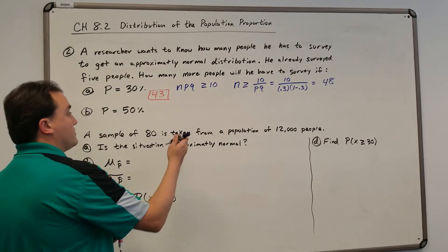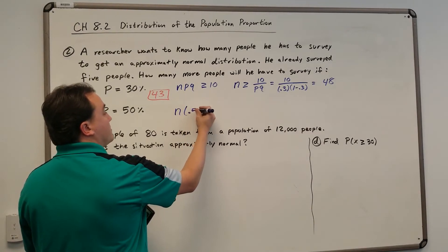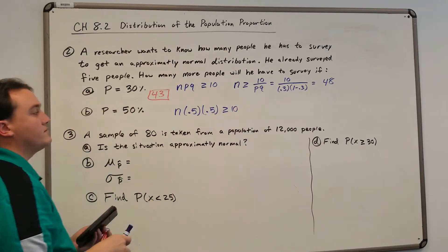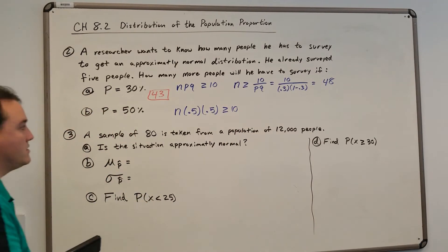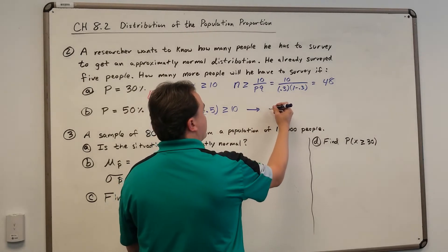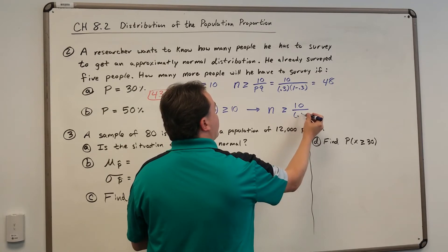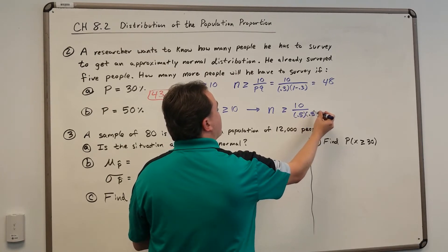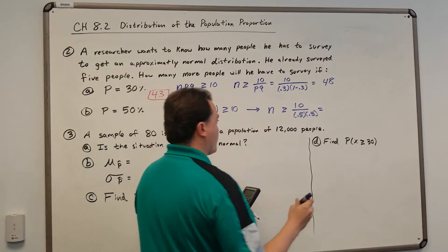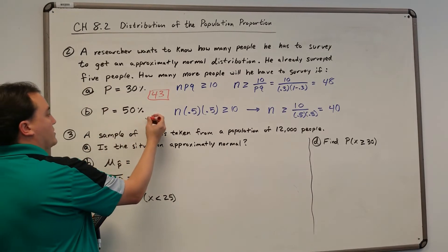For part B with P equal to 50%, we do the same thing. P is 0.5 and Q is also 0.5. N is greater than or equal to 10 divided by 0.5 times 0.5, which equals 40. Since he already surveyed five people, he has to survey 35 more people.